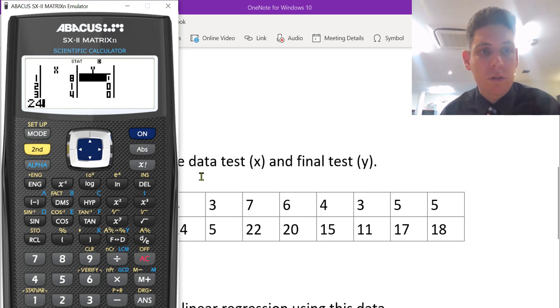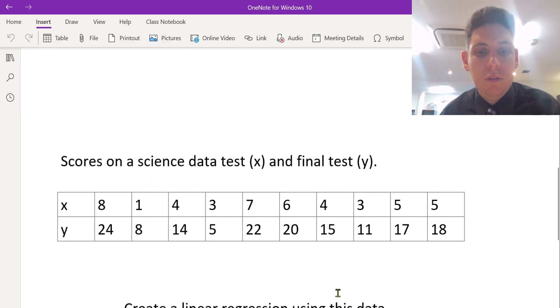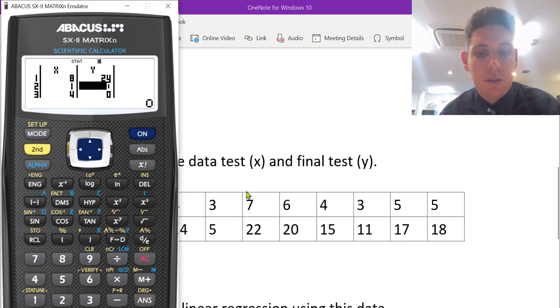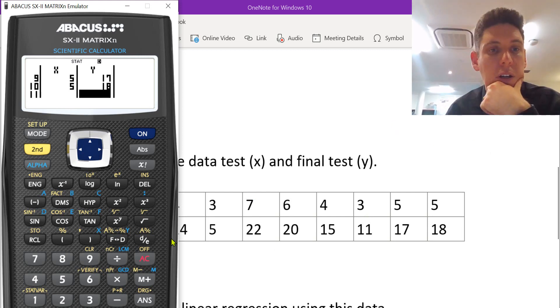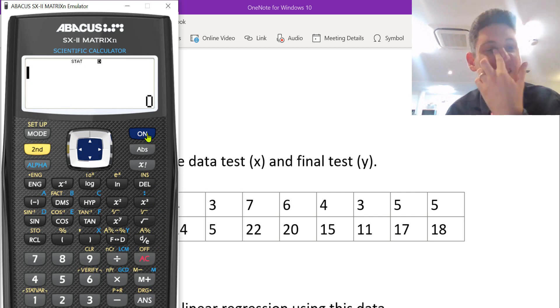So 24 equals. All right, so now you've got all your data. Press the on button. And you can see a little stat symbol. That means you've got all your statistics typed in.